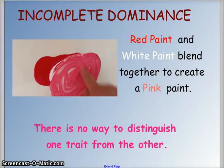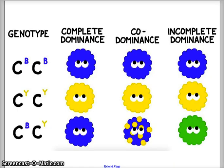With complete dominance, we have a dominant blue and a recessive yellow, and the blue masks the yellow. With codominance, both traits show in some form in the offspring. With incomplete dominance, we take the dominant blue trait and the dominant yellow trait and get a blended combination — blue and yellow making a green offspring. So incomplete dominance blends the two traits together to get the new phenotype.